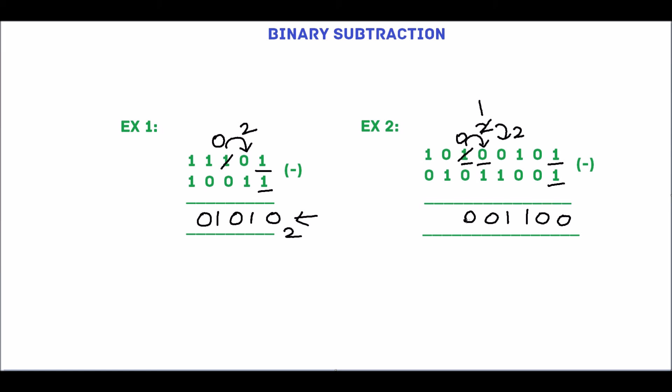Next, 0 minus 1. We cannot separate. Take borrow from the next digit. Borrow is 2. 1 has given the borrow, so it will be 0. 2 minus 1 is 1. 1 minus 1 is 0.